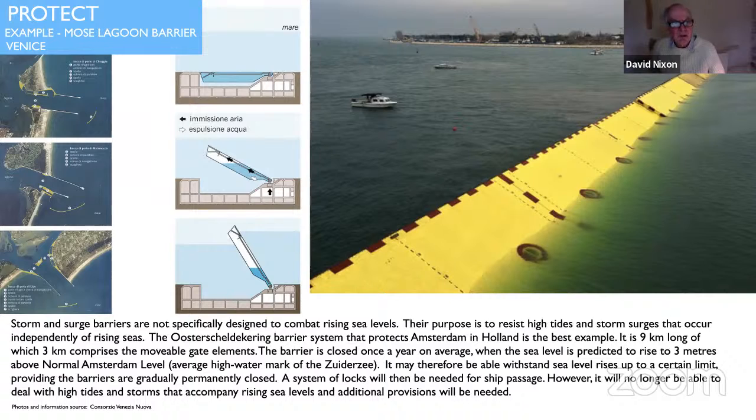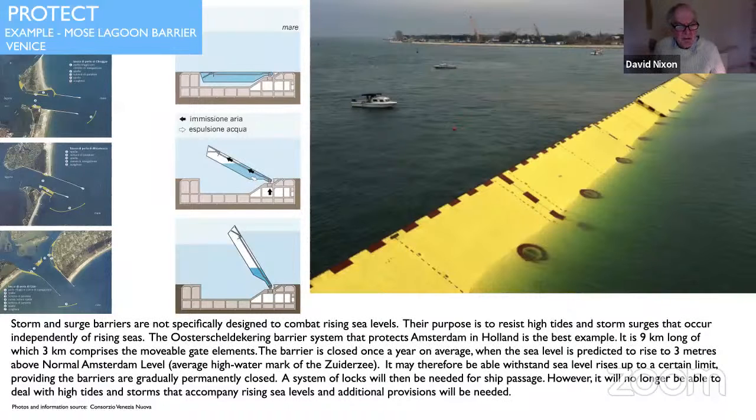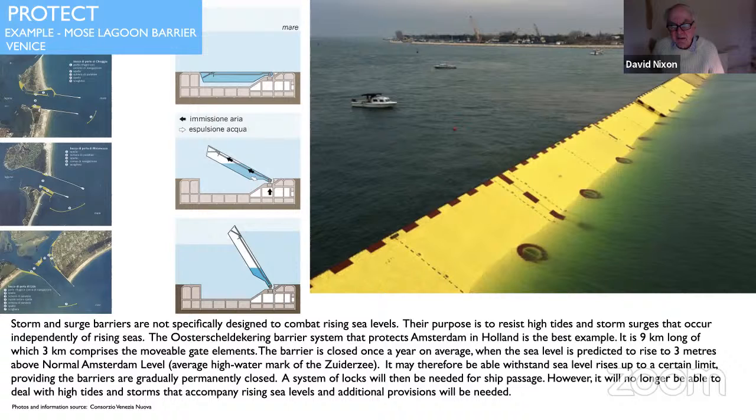And then when the waters rise, the water is pumped out of the barrier chamber by air, which causes the barrier sections to rise and appear on the surface. Not particularly a brand new piece of technology because submarines have been working like this ever since they were invented in the 19th century. But applied to this situation, not only is it a very efficient way of keeping the water out, but visually it's very minimal. That is to say, you don't see it as a barrier until it's needed. So that's been installed at the three main ship channels leading from the Adriatic into the Venice Lagoon and appears to be working well.